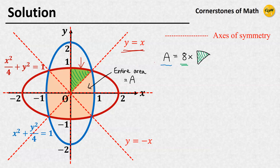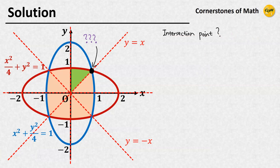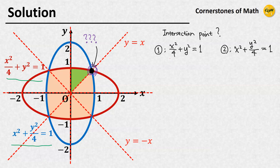We can calculate this area by integration, but first we have to find the coordinates of the intersection point located in the first quadrant. We can easily do that by simultaneously solving the two equations. From the first equation, we have y squared equals 1 minus x squared over 4.